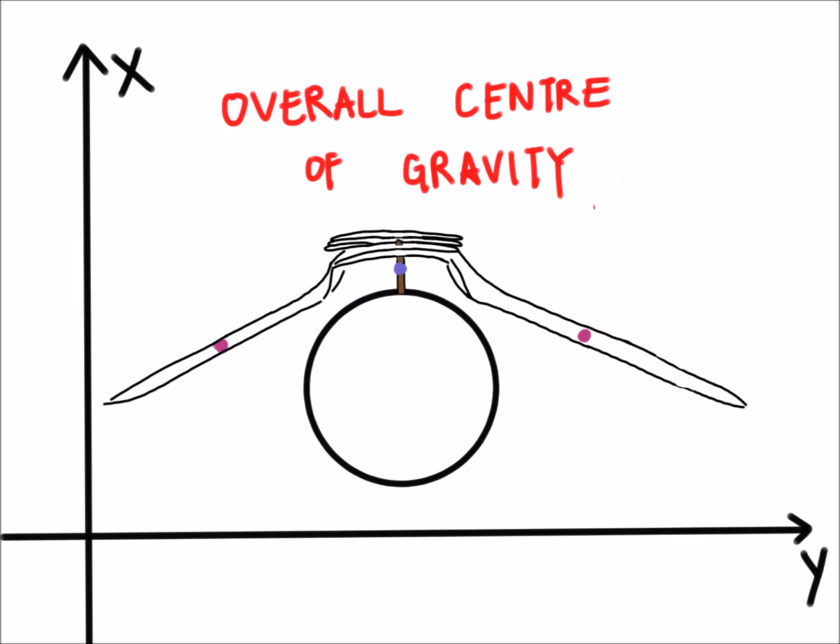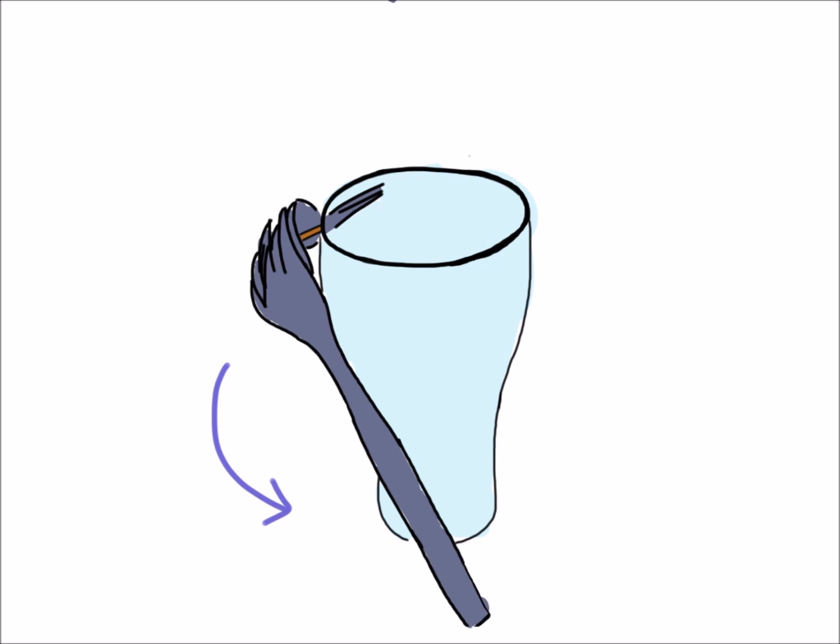The resulting overall center of gravity is straight down from the point where the toothpick sits on the rim of the glass, which is the pivot point. Looking closely at the balancing utensils, the handles are curved well below the toothpick. These move the center of gravity directly below the point where the toothpick touches the rim.